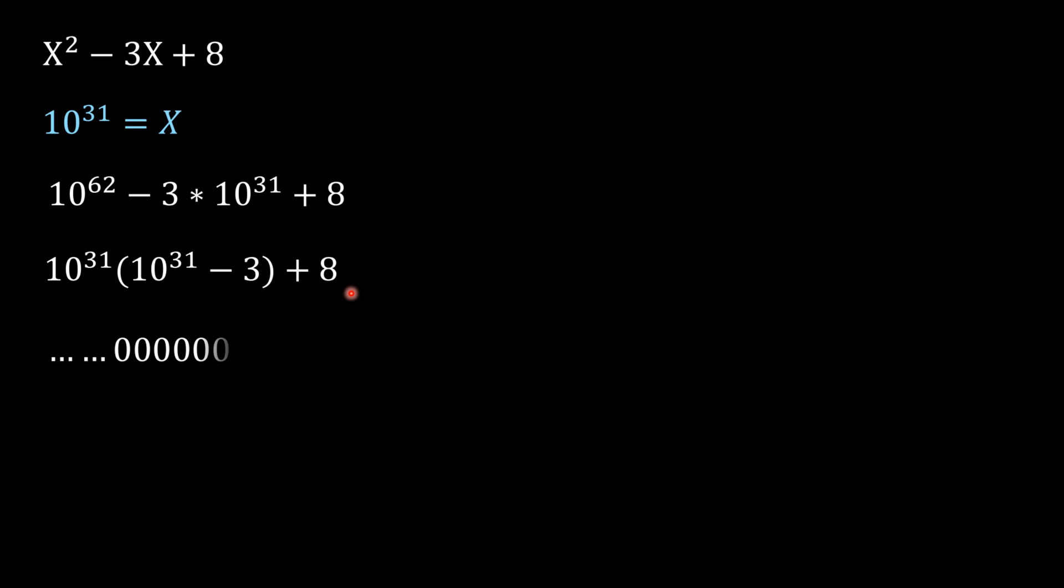So we will have some integer, some value followed by 31 zeros, and then plus 8. We are not worried about the exact value since the problem is to find just the last two digits. We have some value and then lots of zeros—31 zeros. We are only worried about the last two digits here.